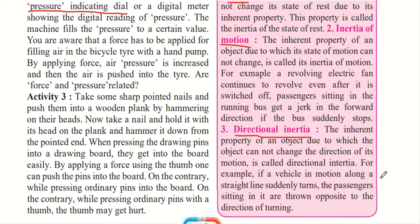For example, if a vehicle in motion along a straight line suddenly turns, the passengers sitting in it are thrown in the opposite direction of the turn. If you are sitting in a car moving in a straight line and the driver takes a steep left turn, your body will move to the right side. This is directional inertia — because we were moving in the straight direction, the sudden turn pushes our body towards the opposite direction.